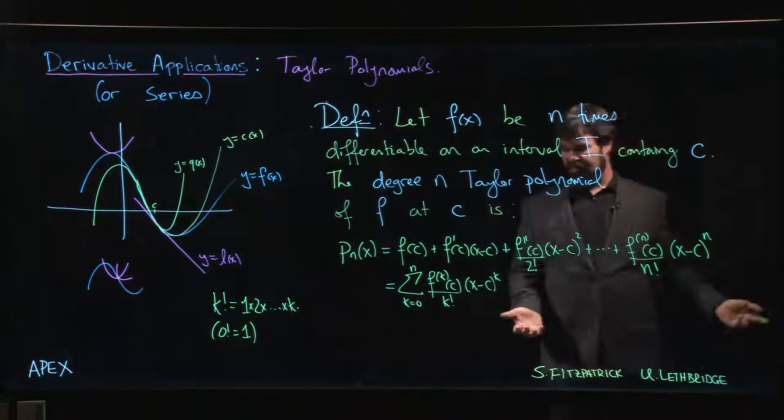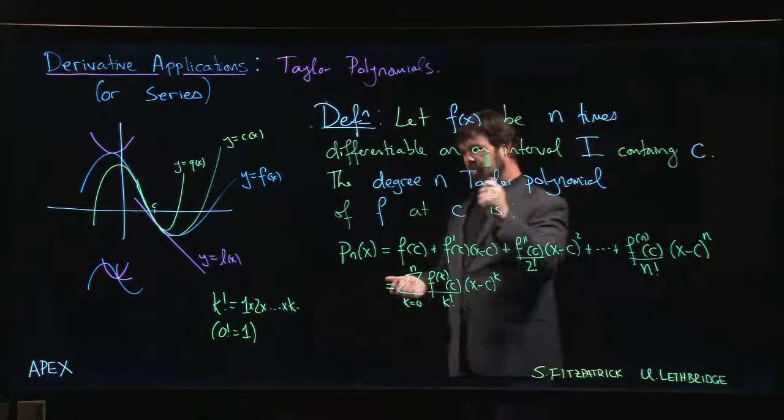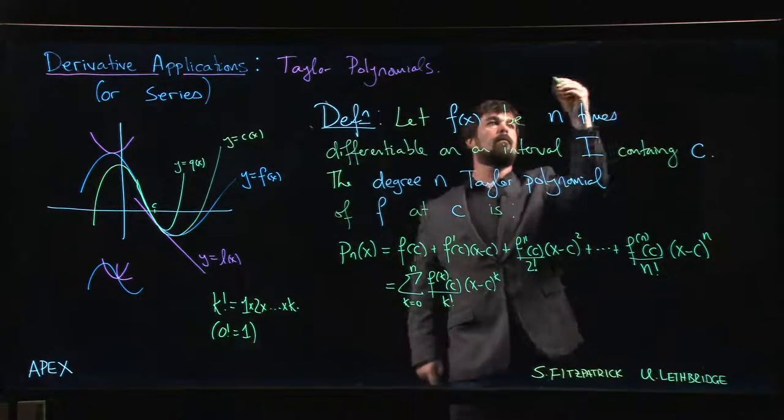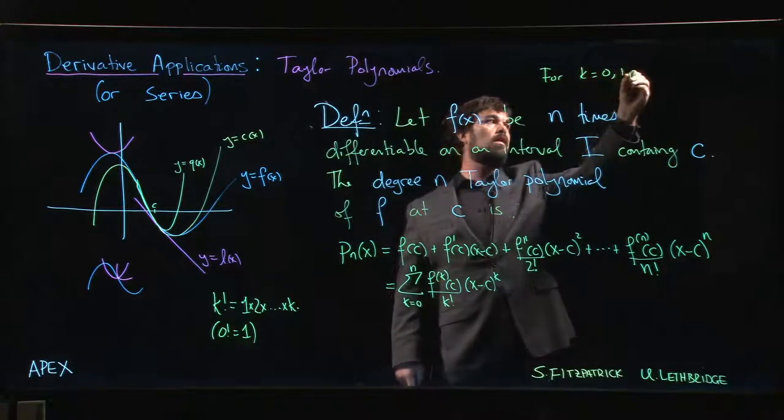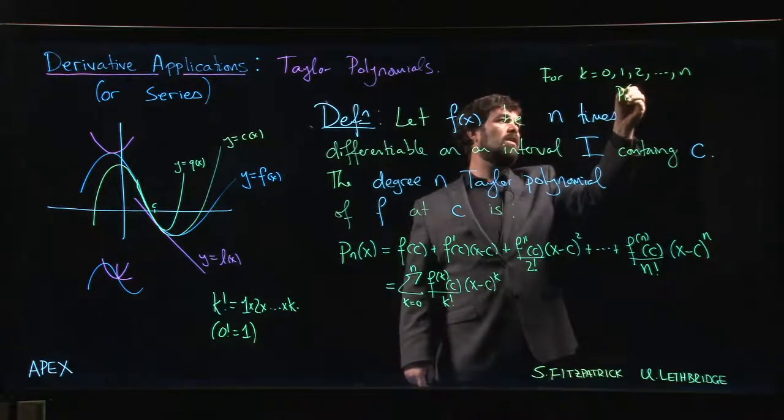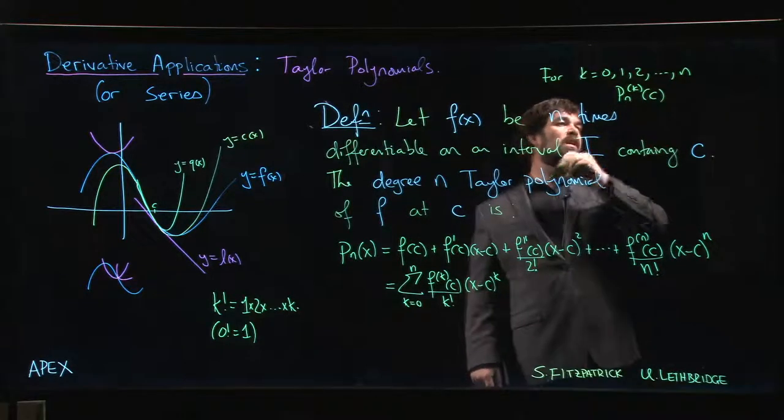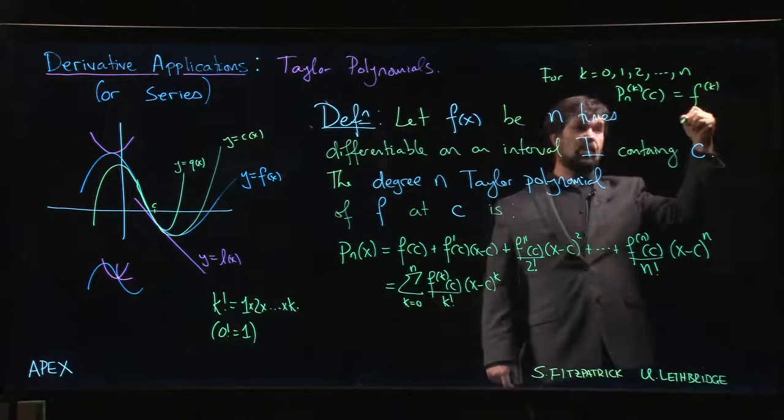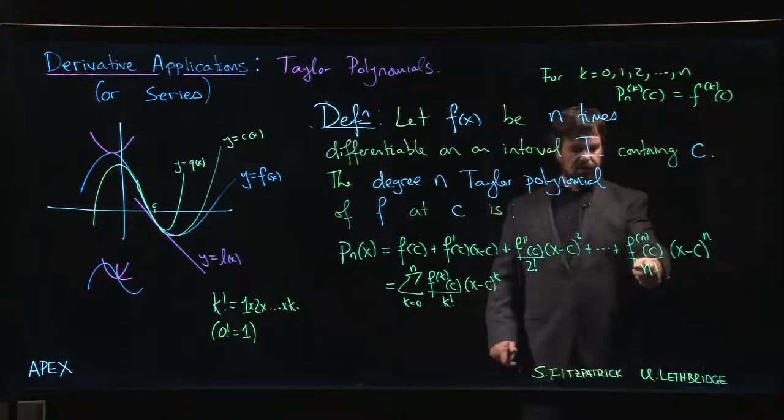The whole point of this Taylor polynomial is that for k equal to 0, 1, 2 all the way up to n, if you take k derivatives of this polynomial and plug in c, you are going to get the same result as taking k derivatives of your original function and plugging in c.